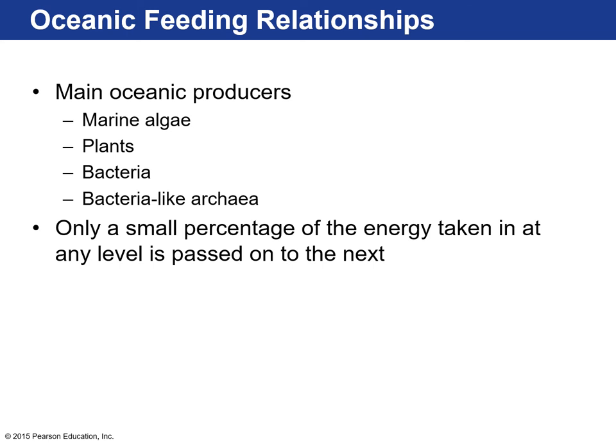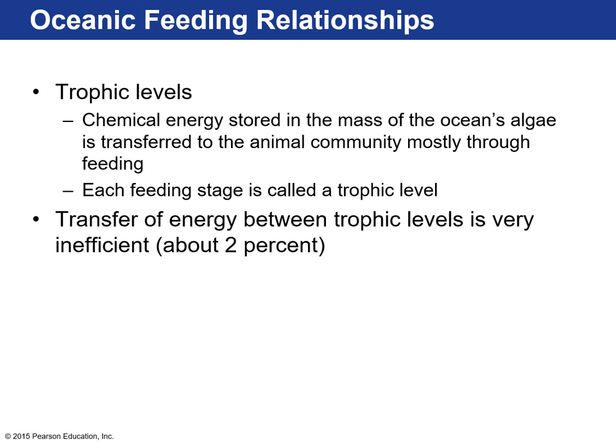The main ocean producers are marine algae, plants, bacteria, and archaea-like bacteria that live at the bottom of the ocean. At each feeding stage only a small percentage of energy is passed to the next — these feeding levels are called trophic levels. Chemical energy stored in the mass of ocean algae is transferred through each trophic level, but that transfer is very inefficient — only about 2 percent of solar energy is converted through photosynthesis by phytoplankton.